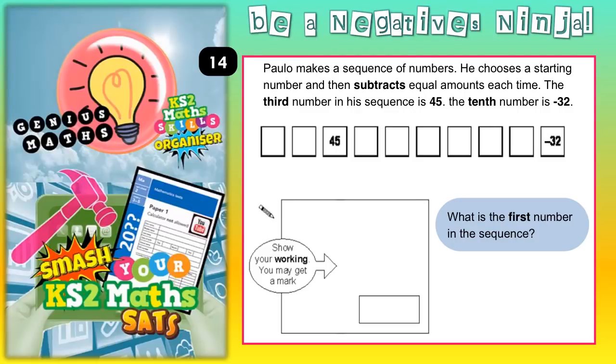Question number 14. Paolo makes a sequence of numbers. He chooses a starting number, which we don't know, so that's a question mark, and then subtracts equal amounts each time.